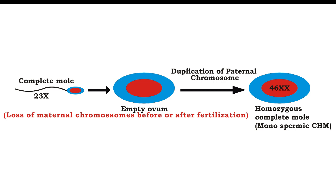Cytogenetics: First, the monospermic complete hydatidiform mole. A sperm with 23X fertilizes an ovum in which loss of maternal chromosomes has occurred either before or after fertilization, resulting in duplication of paternal chromosomes.